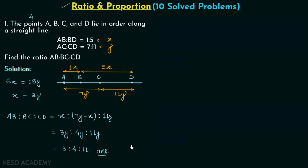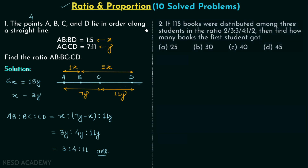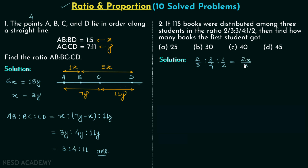Moving on to problem number two: 115 books were distributed among three students in the ratio 2/3 : 3/4 : 1/2, and we need to find how many books the first student got. There are four options. The given ratio is 2/3 : 3/4 : 1/2, and let the common factor be x, giving 2x/3 : 3x/4 : x/2.